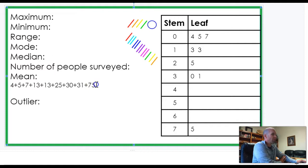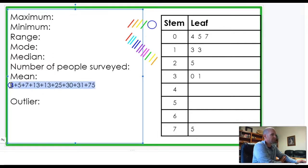So, if you look over here, here's all those numbers that are represented by the stem and leaf plot. We have a four, a five, a seven, a thirteen, a thirteen, a twenty-five, a thirty, a thirty-one, and a seventy-five.